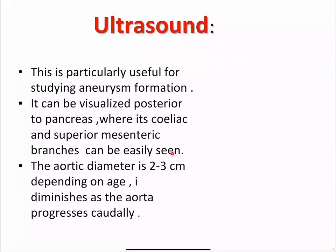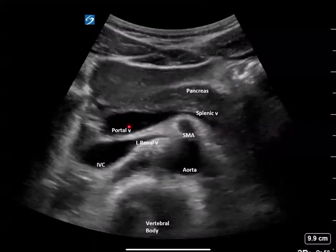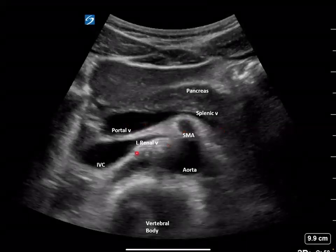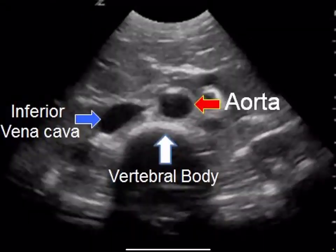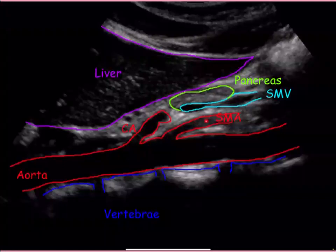Ultrasound is particularly useful for studying aneurysm formation. The aorta can be visualized posterior to the pancreas, where its celiac and superior mesenteric branches can be easily seen. Aortic diameter is about 2 to 3 cm depending on age, and it diminishes as the aorta progresses distally. An ultrasound image shows the pancreas, portal vein, splenic vein, superior mesenteric artery, inferior vena cava, left renal vein, and the aorta. A longitudinal scan of the aorta shows the aorta and its branches — the celiac and the superior mesenteric artery — posterior to the pancreas.